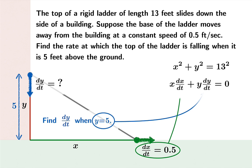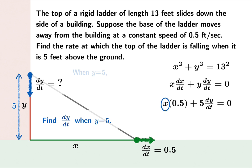At the moment in question, we can substitute 5 for y and 0.5 for dx/dt. And we're still missing one bit of data. What is x at this moment? But when y equals 5, we can substitute into the Pythagorean identity to find that x is 12.